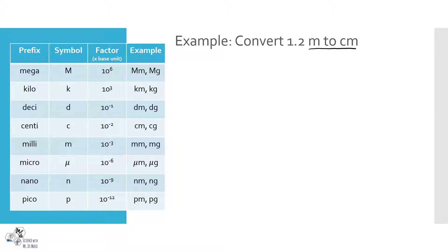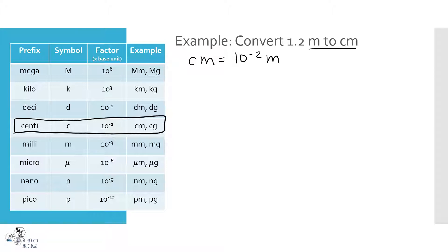Now we're going from meters to centimeters. The conversion factor is: a centimeter equals 10 to the negative second meters. When doing any math or science word problem, I always start by figuring out what the final units need to be. In this case it's asking me to convert to centimeters, so I'll put a centimeter with a question mark beside the problem, or box it in the question, so it stands out as what I'm looking for. This helps especially in multi-step problems.